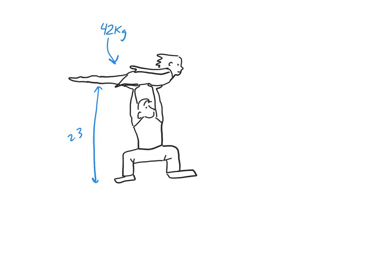The equation you're going to want to use is: potential energy is equal to mass times gravity times the height. So potential energy is equal to 42, times g which is 9.8, and the height is 2.3.